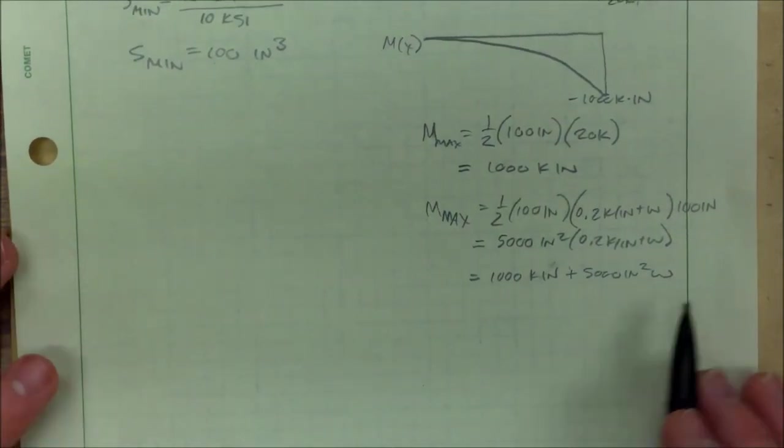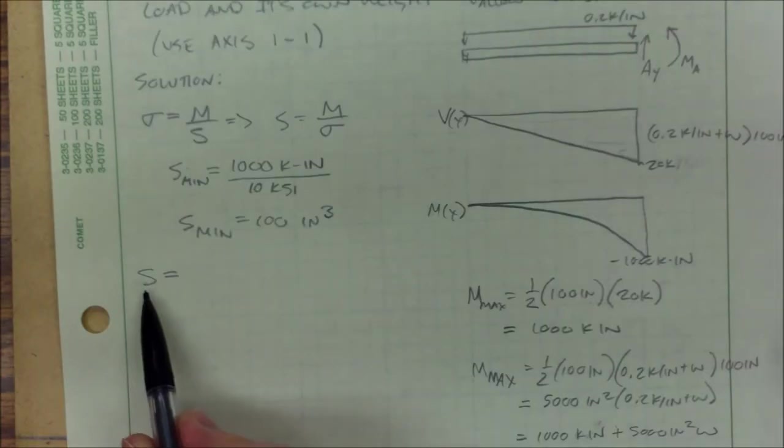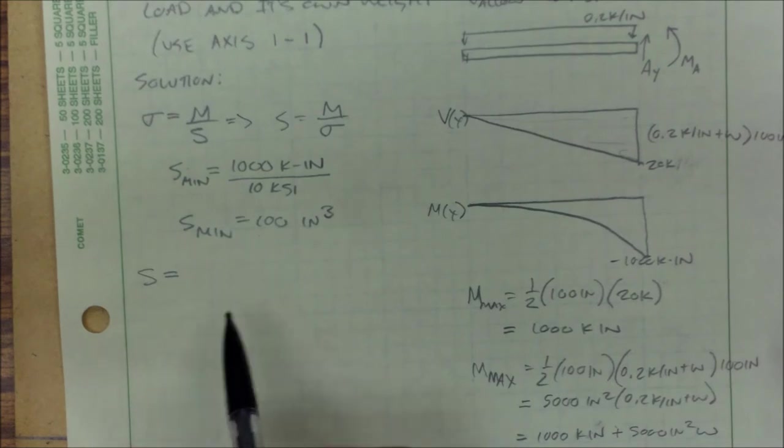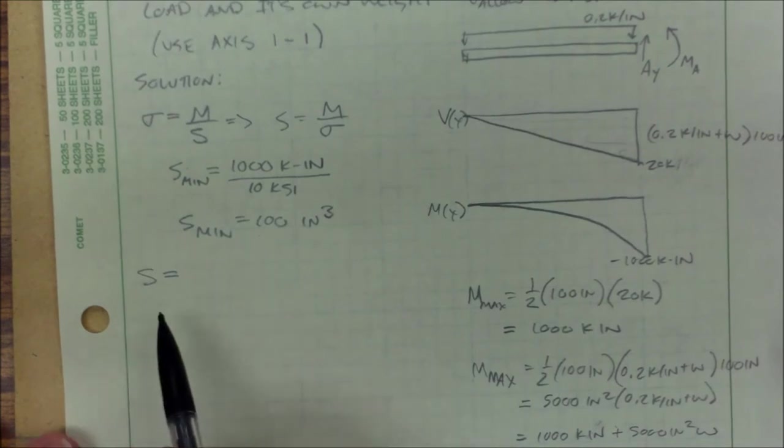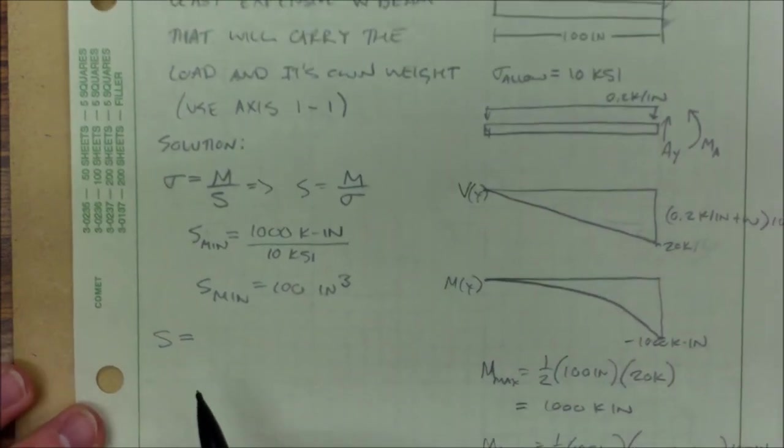5,000 inches squared, 0.2 kip per inch plus w. 1,000 kip per inch plus 5,000 inches squared times w. So now we can start our same process over with a new maximum moment to get how big S has to be in order to hold both the load and its own weight for a variable weight.